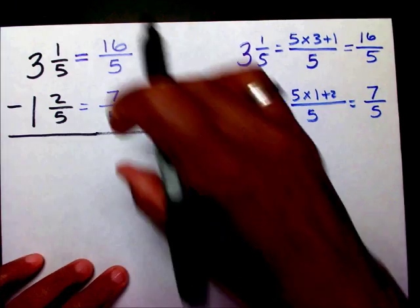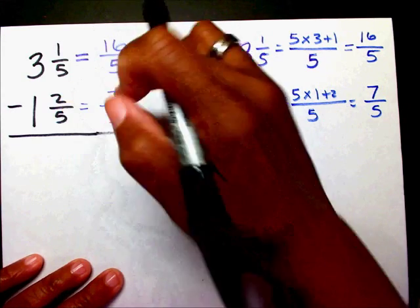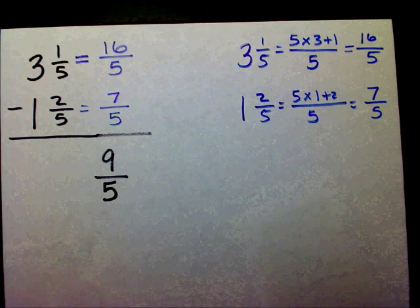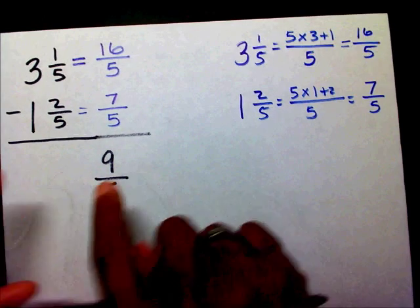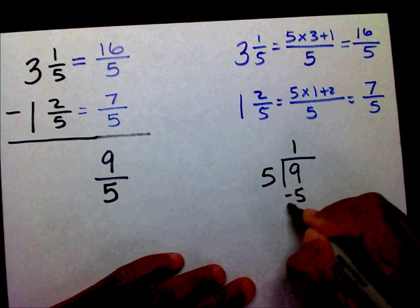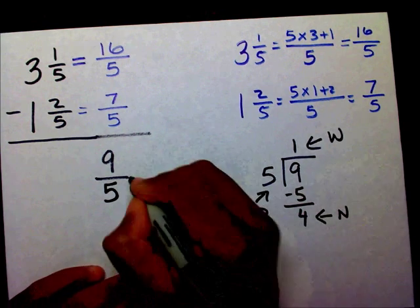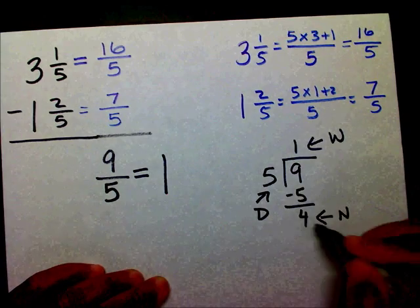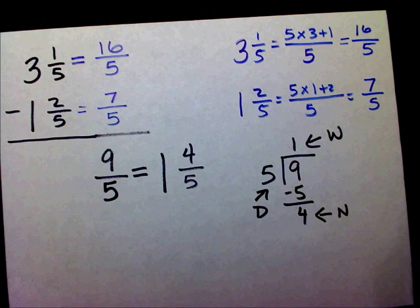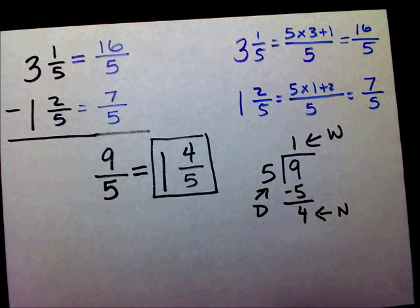If you notice, I have the same denominator. Since I have the same denominator, I can now subtract my fractions. Sixteen minus seven is nine, and I keep my same denominator, five. Now I need to change this improper fraction back into a mixed number. Nine divided by five goes in there one time — that's my whole number. So my final answer is one and four-fifths.